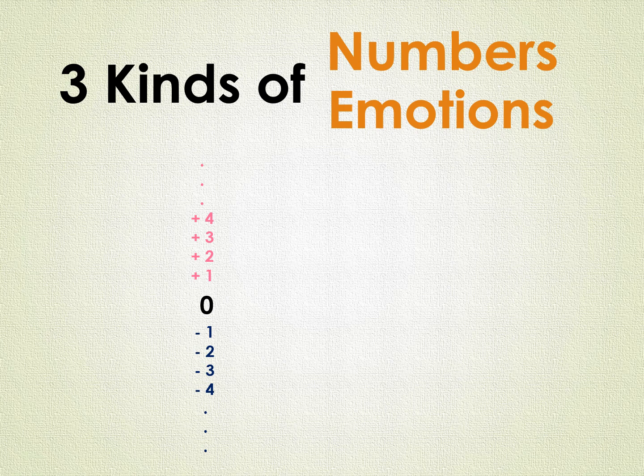Similar to numbers, we have three kinds of emotions: positive emotions, negative emotions, and zero emotion. We will see them one by one.